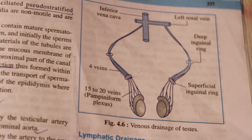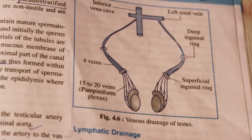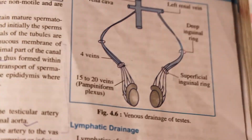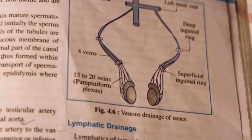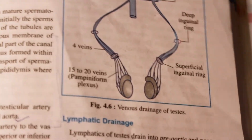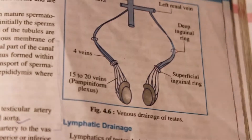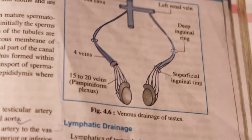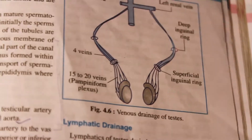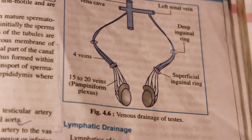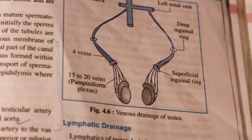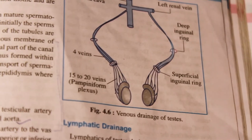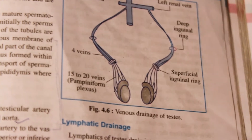Now come to the development of testis. Each testis develops from a gonadal ridge of intermediate mesoderm, which forms the derivatives of the urogenital system. The lumens of the testis, such as seminiferous tubules, are formed by canalization of sex cords. The canal of the epididymis is also formed by canalization of sex cords. The interstitial cells of Leydig are developed from mesenchyme of the gonadal ridge. The spermatogenic cells are developed from endoderm of the yolk sac, and the Sertoli cells are developed from coelomic epithelium.